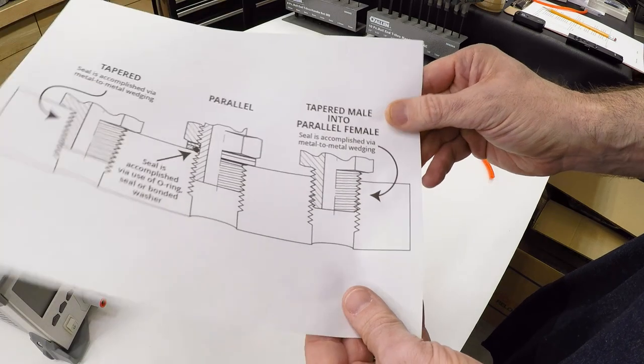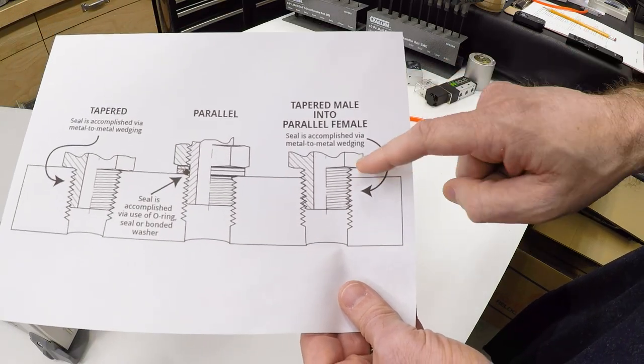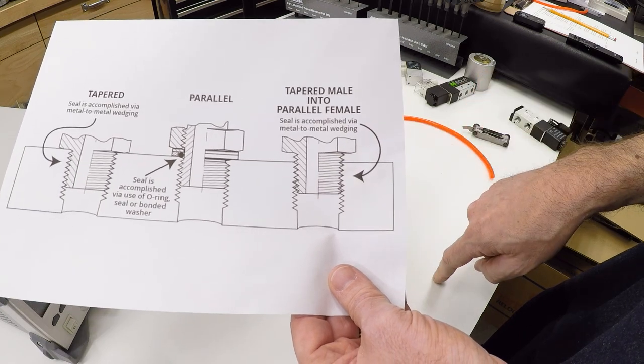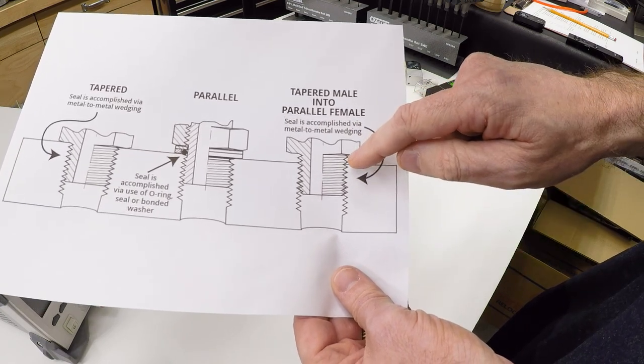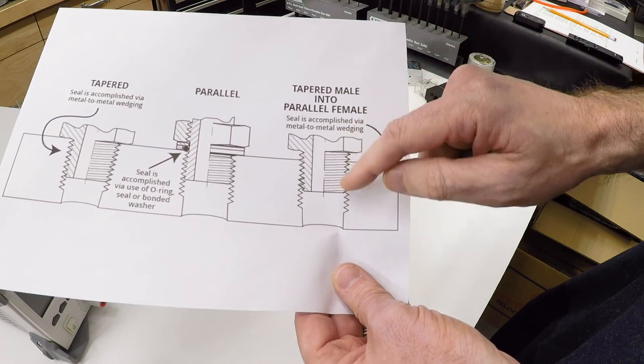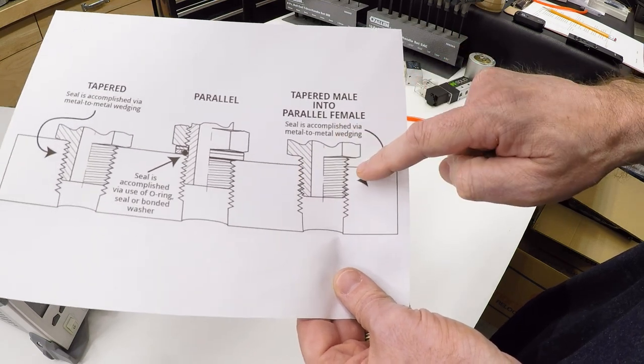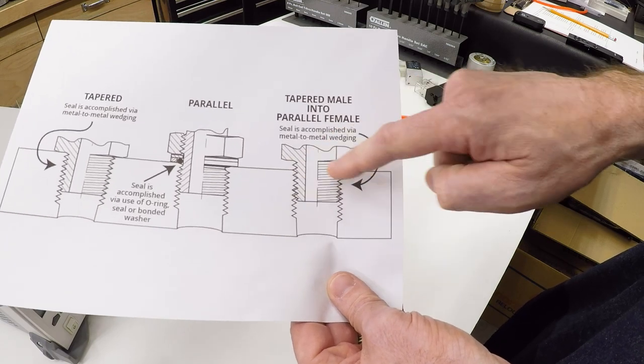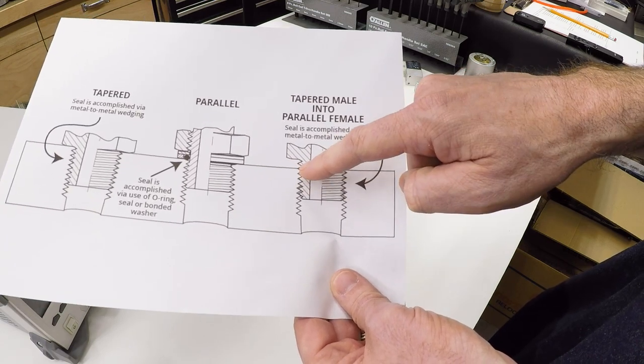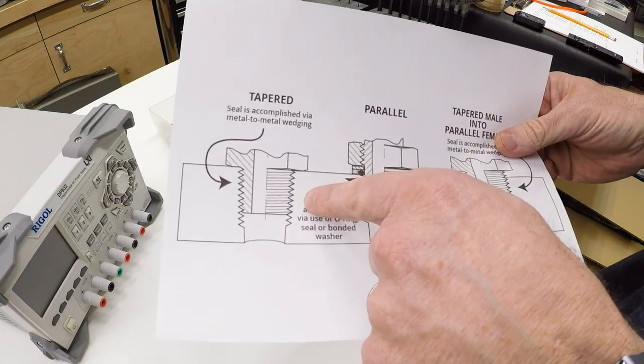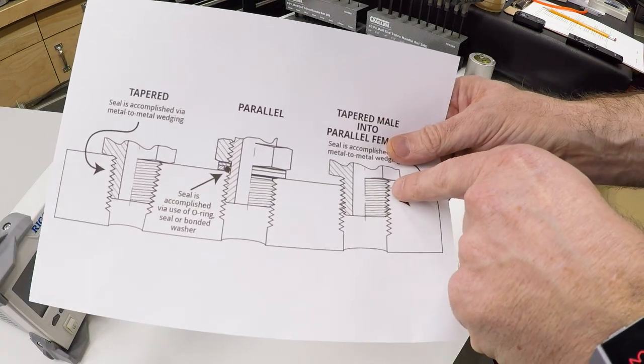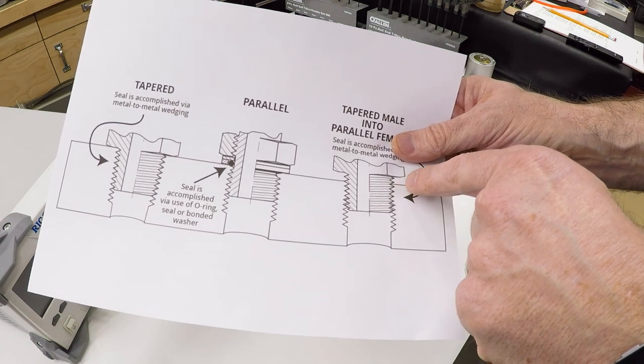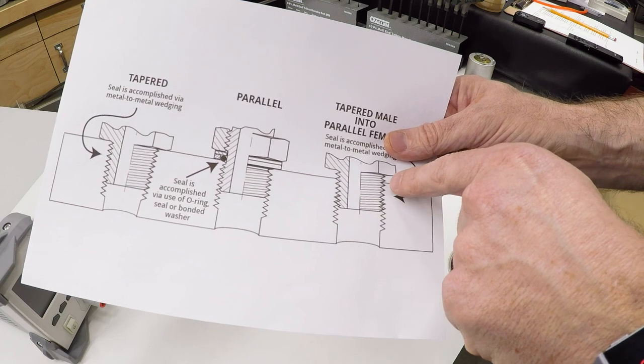The third thing that you see sometimes that I personally don't prefer is a tapered male fitting going into a straight female hole. The way this works is it starts out loose and as you tighten it down, it gets tighter and tighter, but only at the top. So you get metal to metal compression at the top of the thread that tries to form a seal. Because you don't have that over the entire length of the thread, like with the taper, it's much harder to get these to seal.